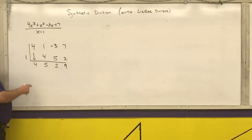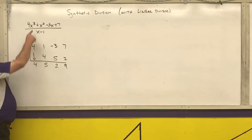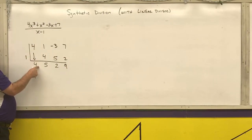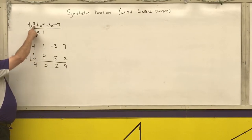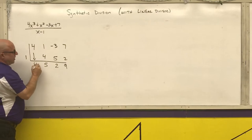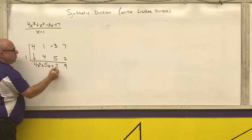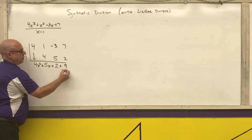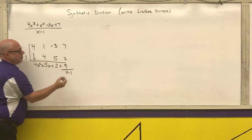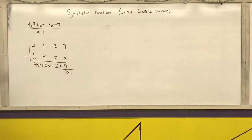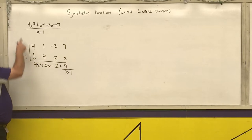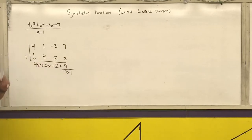Starting from the left, to write it as the polynomial answer, I take one degree less than what I started with in my dividend. I started with x cubed, so I write x squared plus 5x plus 2 plus my remainder of 9 over x minus 1.